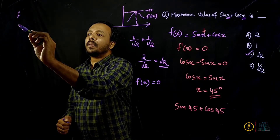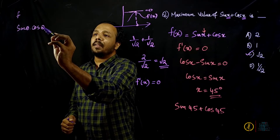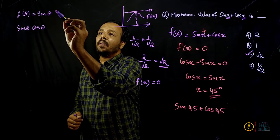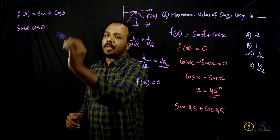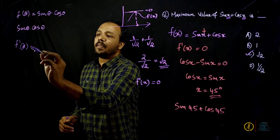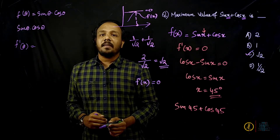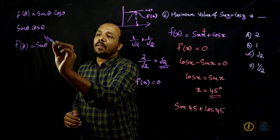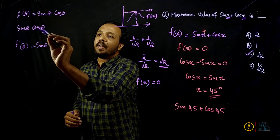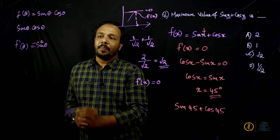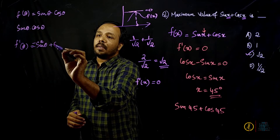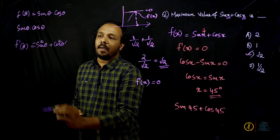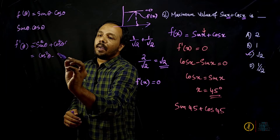The next question is: find the maximum value of sinθ into cosθ. So f(θ) = sinθ · cosθ. To find the maximum, we set f'(θ) = 0. Differentiating sinθ · cosθ using the product rule: the differential of sinθ is cosθ, and the differential of cosθ is minus sinθ. So f'(θ) = cos²θ minus sin²θ.